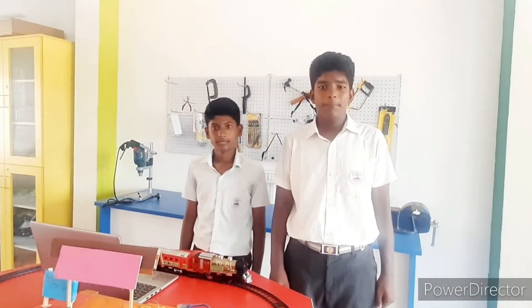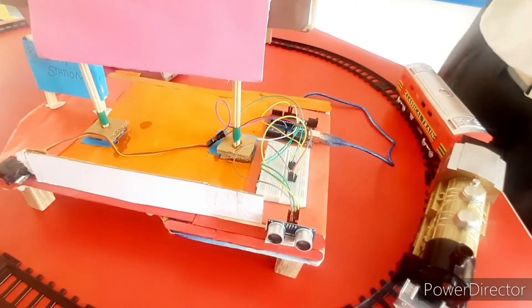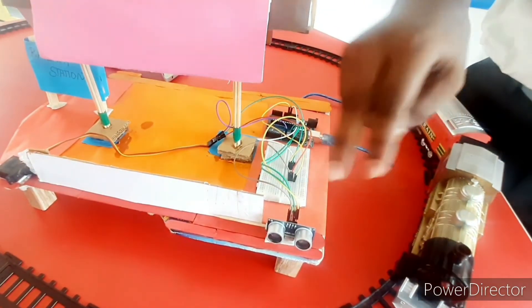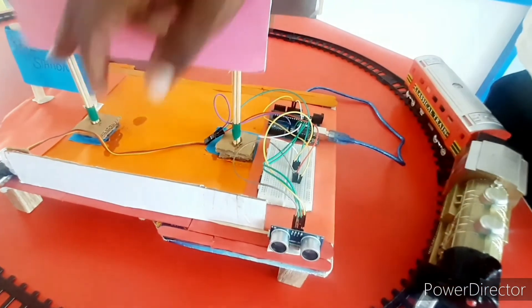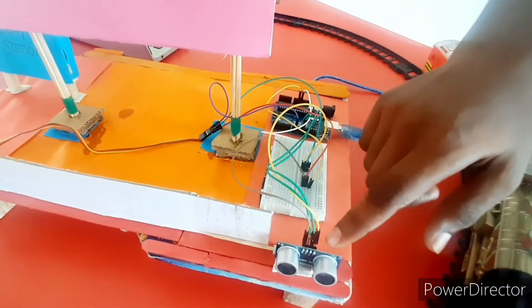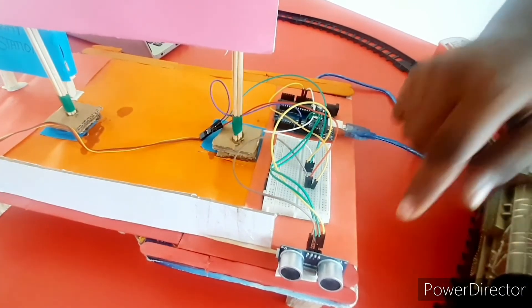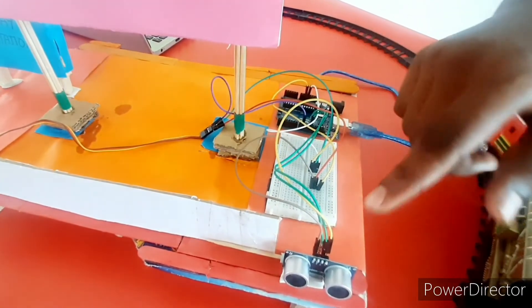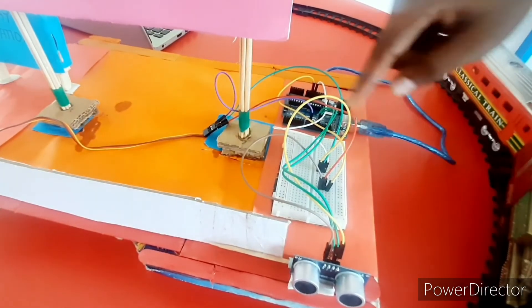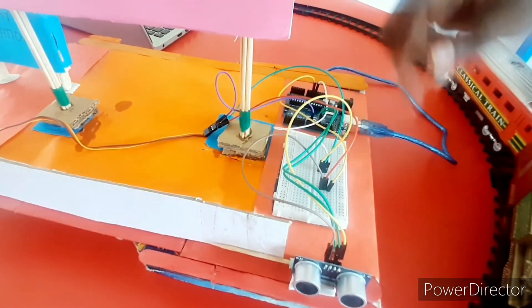Let's see about the working process. First, we need to connect the ground pin of ultrasonic sensor and the servo motor to the ground pin of Arduino. And we need to connect the other three pins of ultrasonic sensor. VCC pin to 5V of Arduino. Trigger pin to D12 pin of Arduino. Echo pin to D11 pin of Arduino.